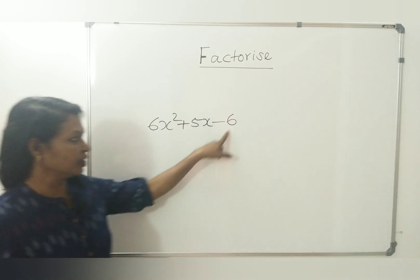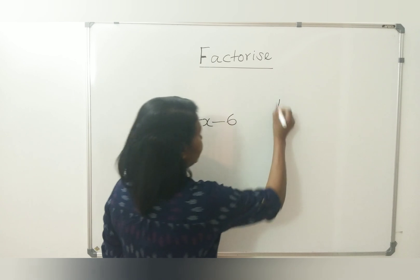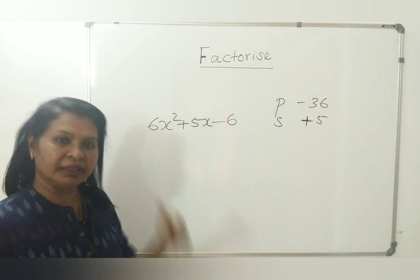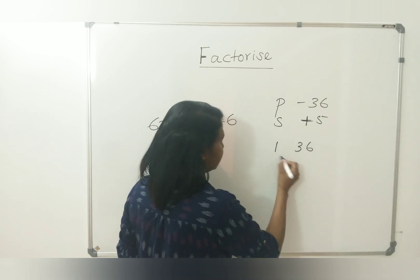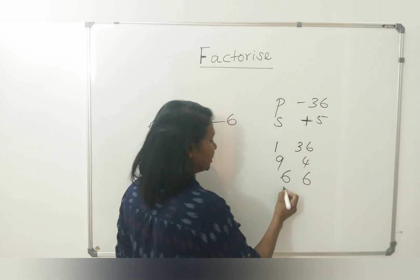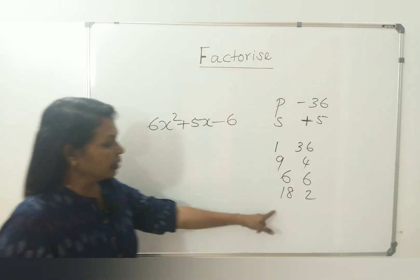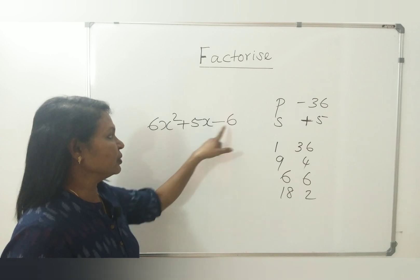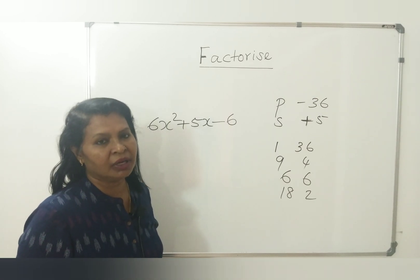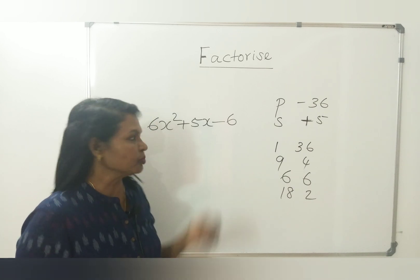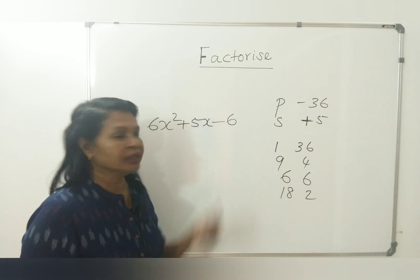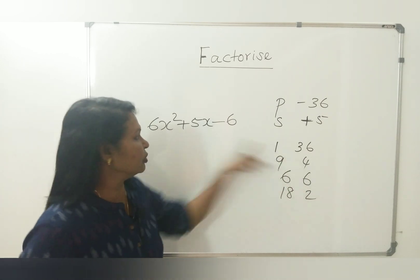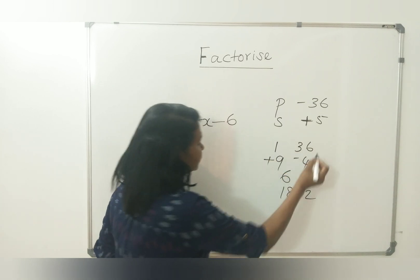This is your question. The product is negative 36 (6 times 6). Product is negative 36 and the sum is plus 5. The possible factors of 36 are: 1 and 36, 9 and 4, 6 and 6, 2 and 18. Since the product is negative, one number is negative and one is positive. Since the sum is positive, the bigger number is positive. The difference of plus 9 and minus 4 gives plus 5.